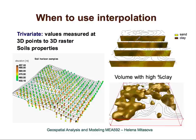We can also use interpolation to convert values measured at three-dimensional points to a three-dimensional raster. For example, here we have soil properties where the measurements are somewhat regular but there are missing points in horizontal space, and the number and distribution of points in the vertical direction is really scattered. To create a volume model of the soil properties based on these samples we use three-dimensional interpolation, going from points to a three-dimensional raster from which we can extract isolines or cross sections.